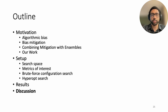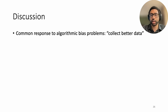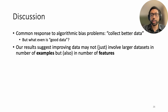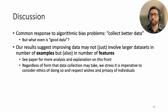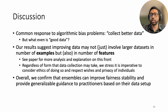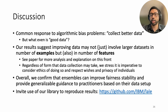Now to conclude with a quick discussion of our findings. A common response to algorithmic bias problems is to collect better data, but what even is good data is a question asked less often. Our results suggest that improving data may not just involve larger datasets in terms of number of examples, but also in number of features. We emphasize that regardless of the form data collection may take, it is important to consider the ethics, wishes, and privacy of affected individuals. Overall, we confirmed that ensembles can improve fairness stability and provide guidance to practitioners based on their data, and we invite others to use our library available on GitHub to reproduce our results. Thank you.